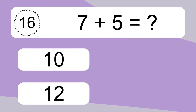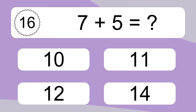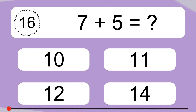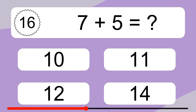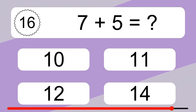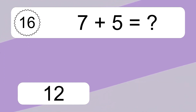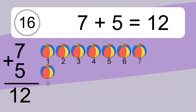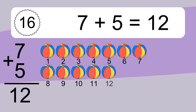7 plus 5 equals what? 7 plus 5 equals 12.